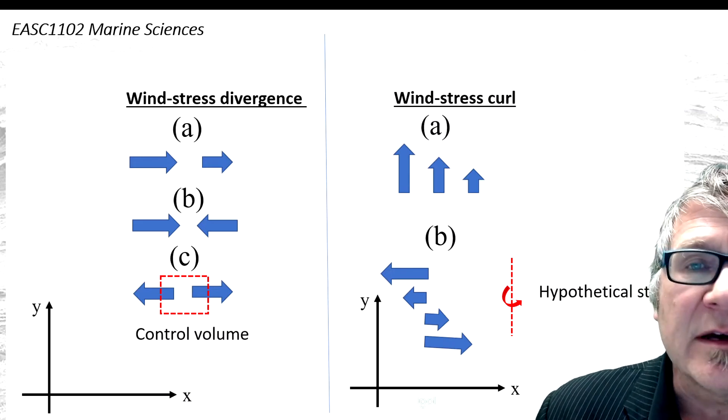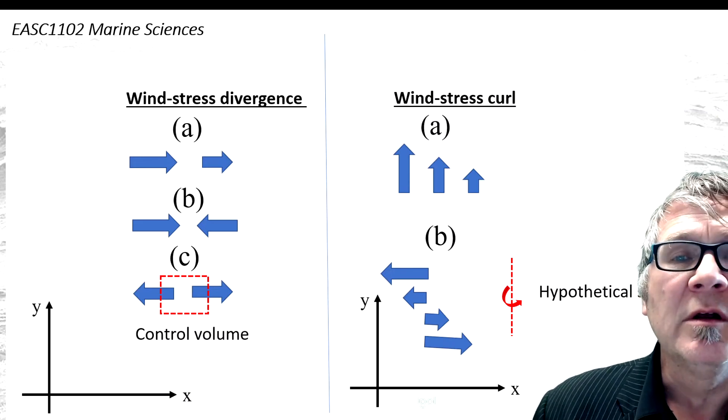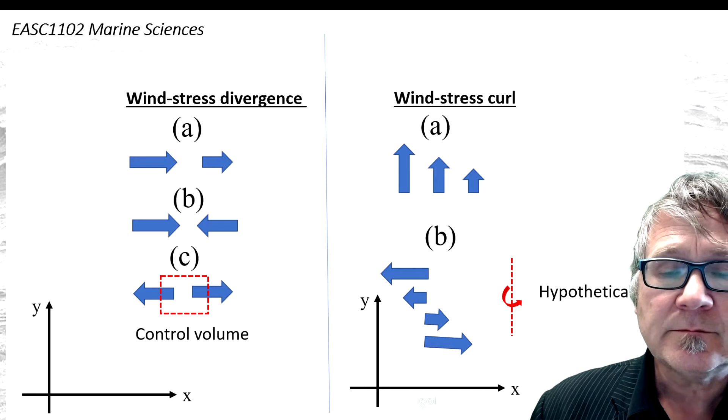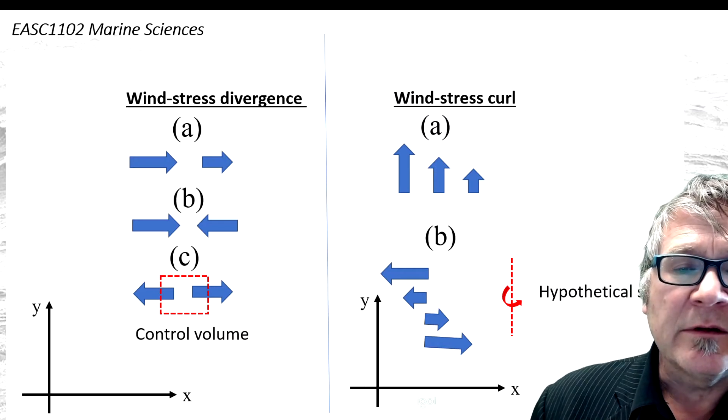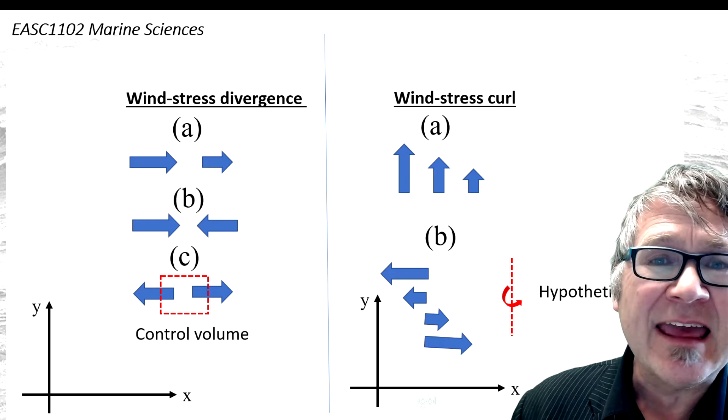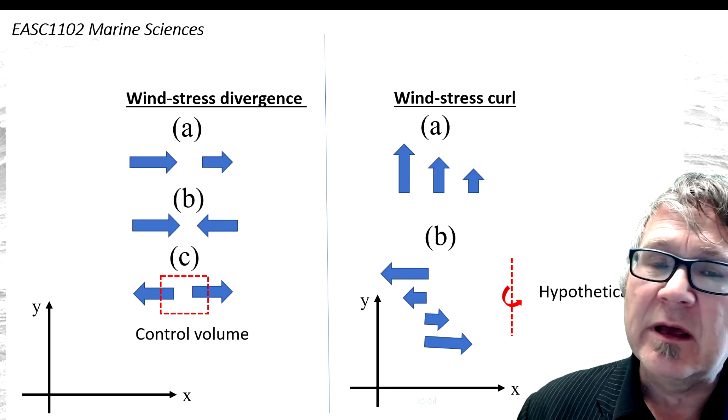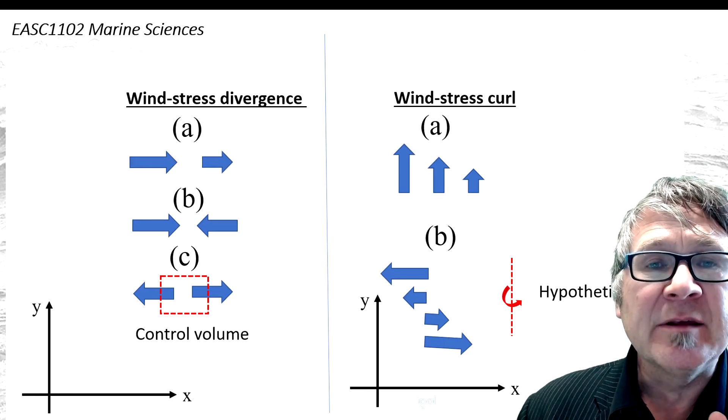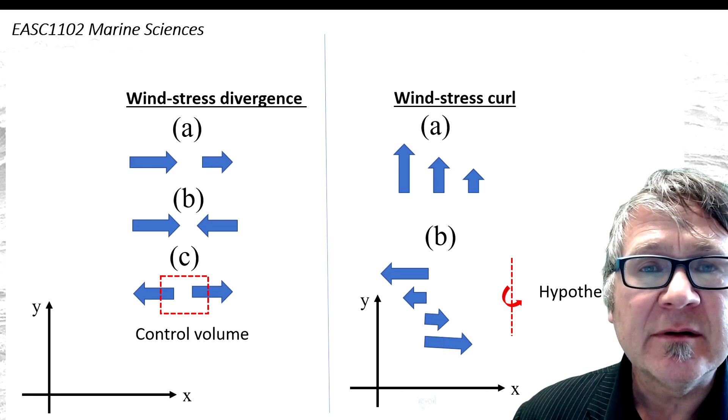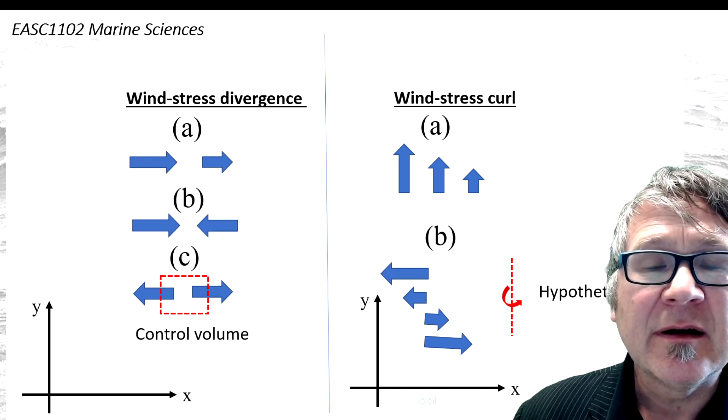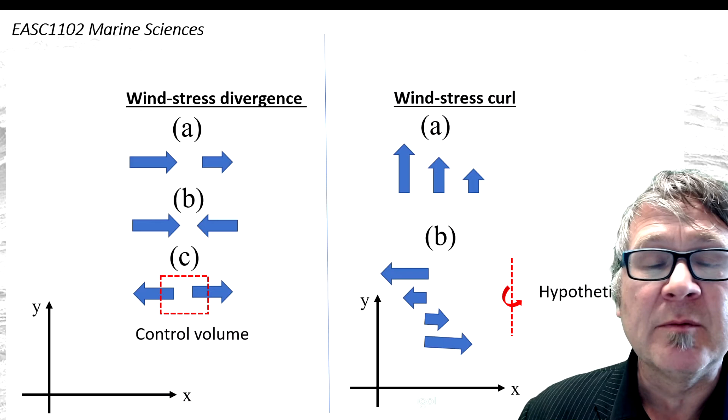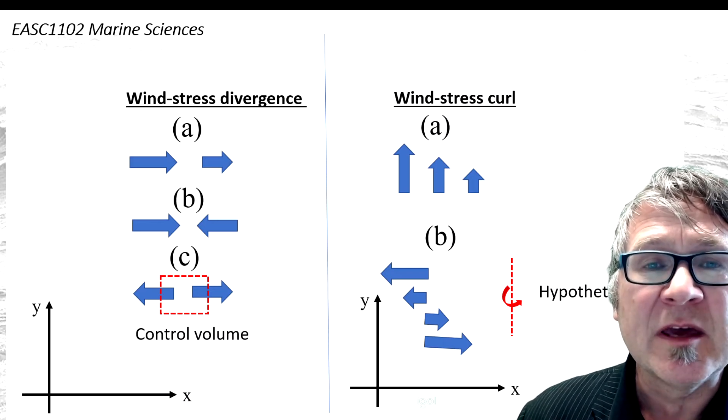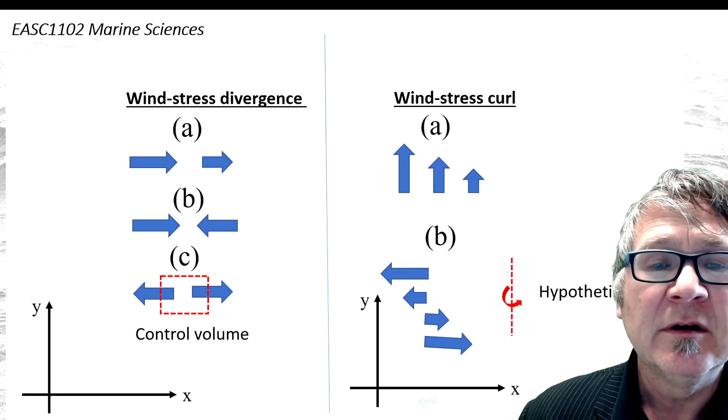On the right-hand side, you have a situation called wind stress curl. In this situation, wind everywhere blows in the same direction, but the wind magnitude decreases perpendicular to that direction. The wind blows north, but becomes weaker as you move east. This is wind stress curl.